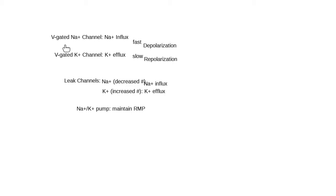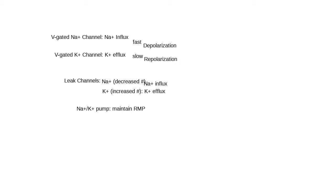Leak channels are always open — they don't have any gates. We have a sodium leak channel and a potassium leak channel. There are fewer sodium leak channels on the neuronal membrane compared to potassium leak channels. The sodium leak channel's activity is not that significant in the action potential, but you should know it exists and is associated with sodium influx. The potassium leak channel — we have a lot of these — and it's going to be associated with potassium efflux. Associate the potassium leak channel with repolarization.